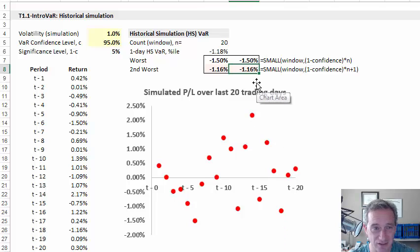So that's really just the answer. It's sorting these returns 20 days. And if we want 95%, we want the second worst return, which is negative 1.16%. And that is the 95% historical simulation value at risk for this window.